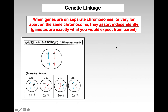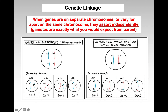Gene linkage: when genes are on separate chromosomes or very far apart on the same chromosome, you get what's called independent assortment and you get expected ratios, just like you would expect from Mendelian genetics and your Punnett squares. So if genes are on different chromosomes or very far apart, you get the expected gametes from your Punnett squares.